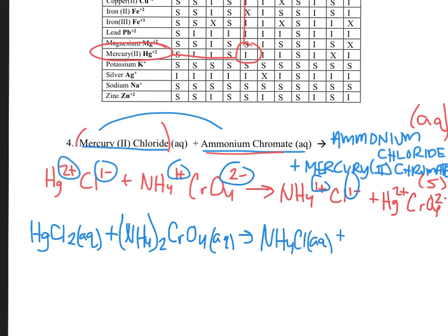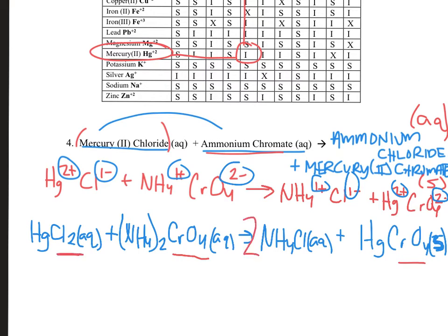And last but not least, we have mercury two chromate. Mercury is 2+, chromate is -2. These two just come together one to one. Don't forget to put the S for solid — that proves this reaction is actually going to happen. Now all we need to do is balance this out. One chromate and one chromate. Two chloride ions — I'll put a 2 here, which gives me two ammoniums. One mercury, one mercury. It looks like we are balanced with coefficients 1, 1, 2, 1. Looks like number four is done.